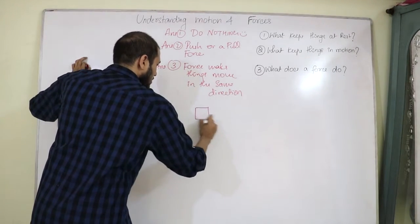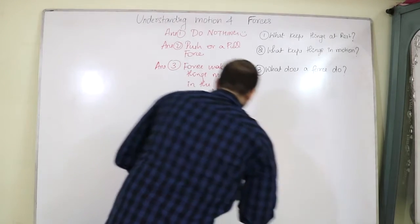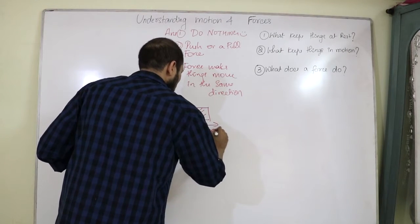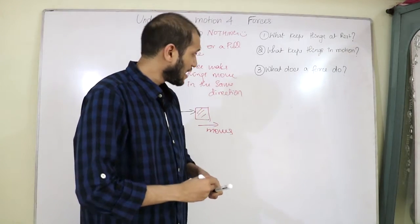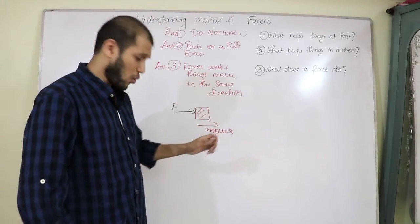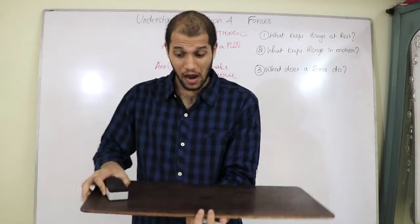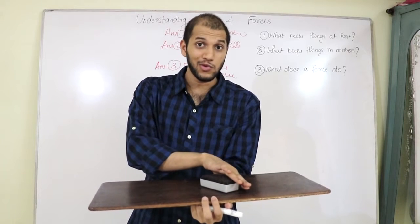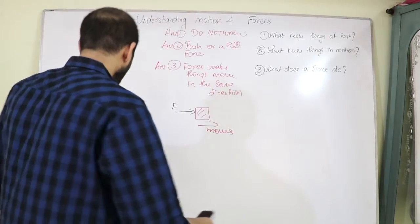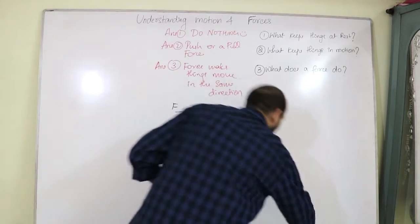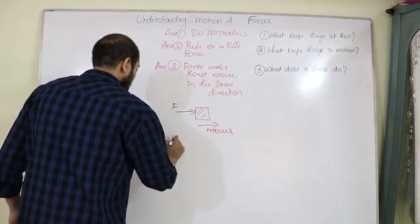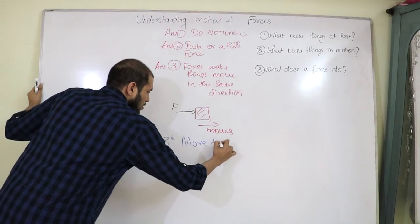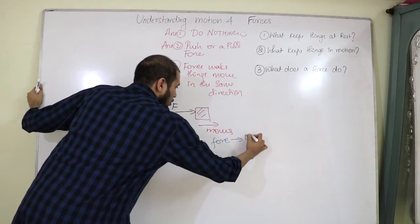That means if I take an object and push it this way, it moves this way — exactly what we saw. We can also understand one more thing about force: what happens when I push it very hard? It moves very fast. And if I push it softly, it moves slowly. So as a bonus, we know one more thing about force: more force implies more speed.